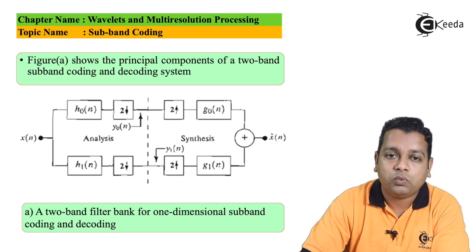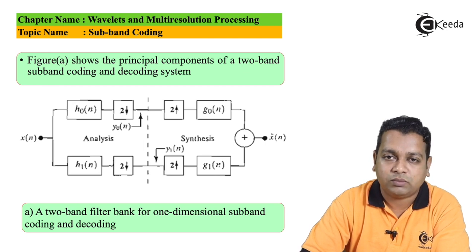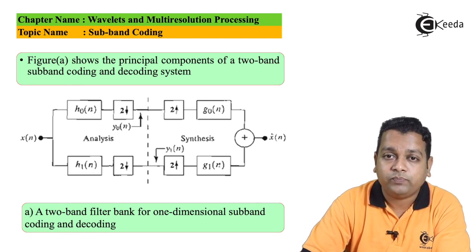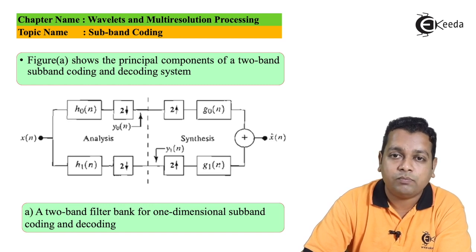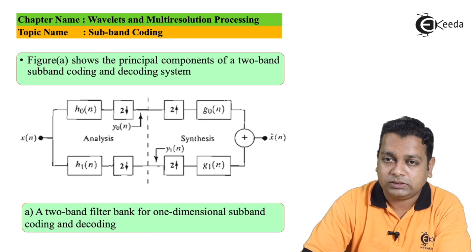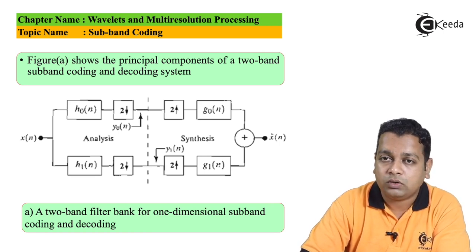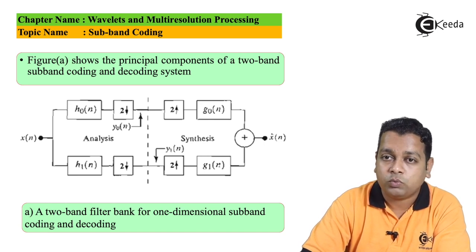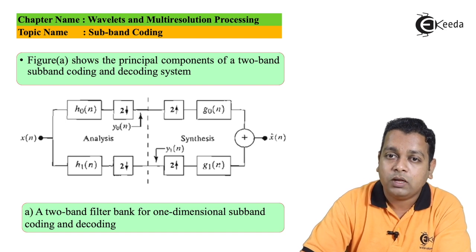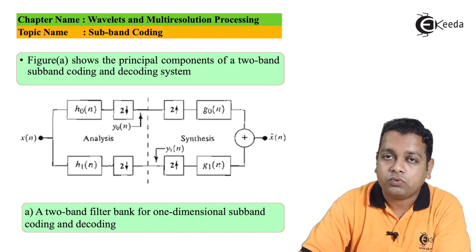In this case we have only two bands, but we can go for multiple bands to construct the analysis filter bank. On the right-hand side, for reconstruction we use up-samplers or interpolators with the same factor of 2, followed by filters with transfer functions g₀(n) and g₁(n) for the two corresponding branches. Their outputs are given to a summer to obtain the output x̂(n).